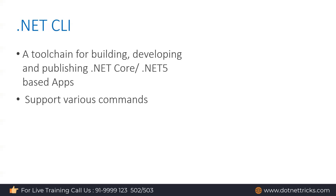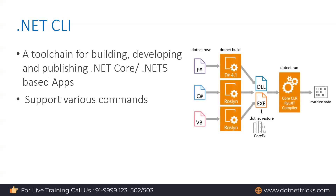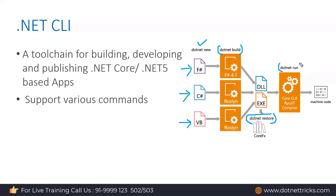In .NET, we have the Command Line Interface (CLI) which provides a set of commands for building and developing .NET Core, .NET 5, and .NET 6 based applications. You can use `dotnet new` to create a C#, F#, or VB.NET project. The respective compiler is used when you run `dotnet build`. For restoring packages, use `dotnet restore`, and for running the code, use `dotnet run`.